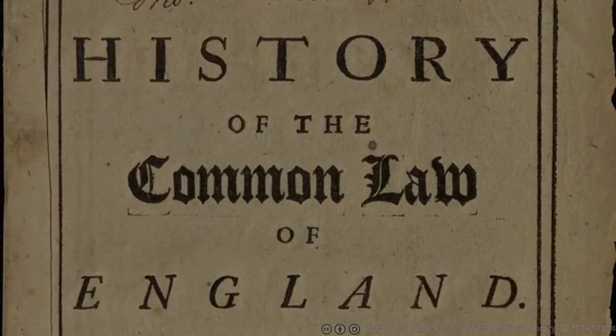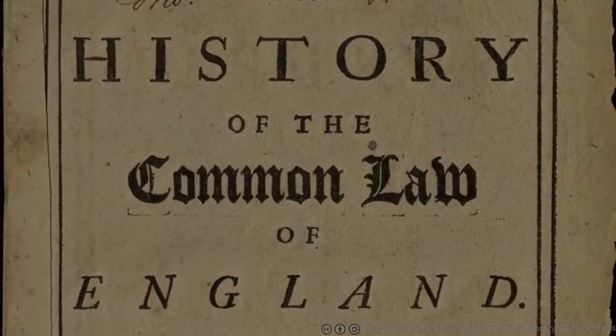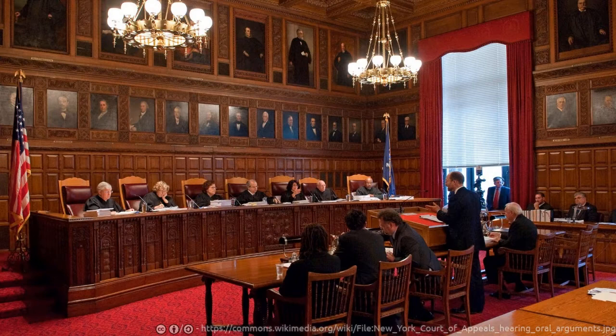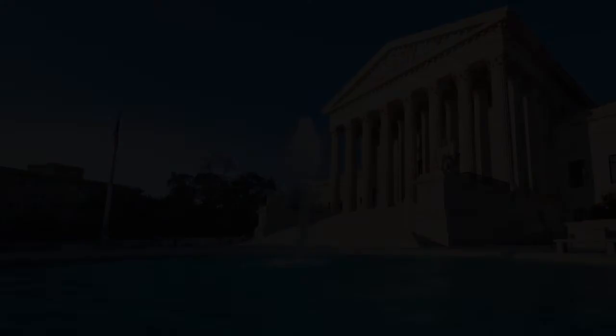The evolution of the writ of mandamus is a fascinating probe into the influence of English common law onto the jurisprudence of the United States of America. The exacting criteria upon which a petitioner must satisfy before a court issues a writ of mandamus translates into appellate courts rarely granting such relief, especially to correct acts within the discretion of a district court judge. So, it'll be really interesting to see how the Court of Appeals for the District of Columbia Circuit in the Flynn case responds to Judge Sullivan's decision-making regarding the Justice Department's motion to dismiss.